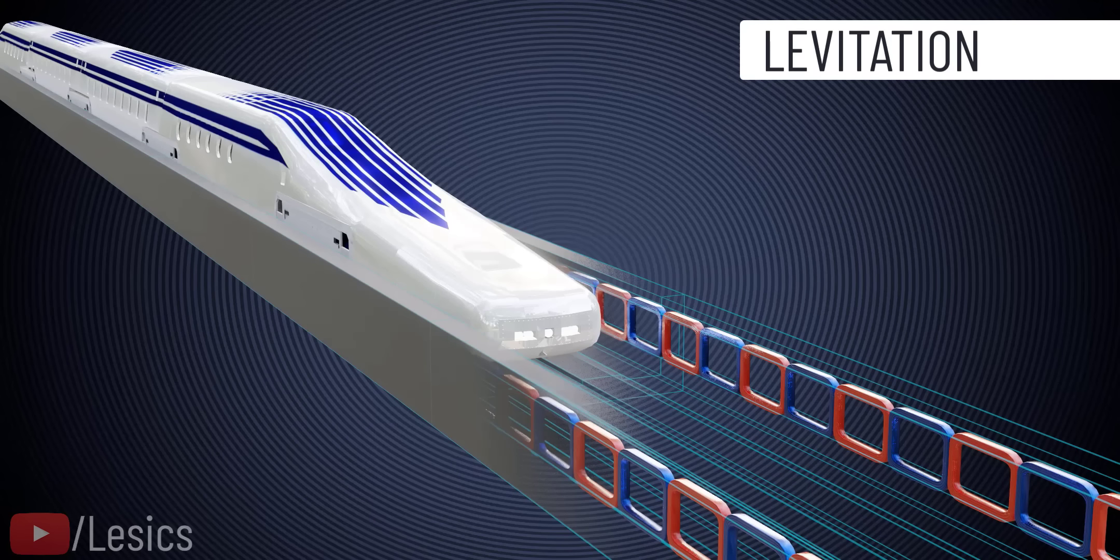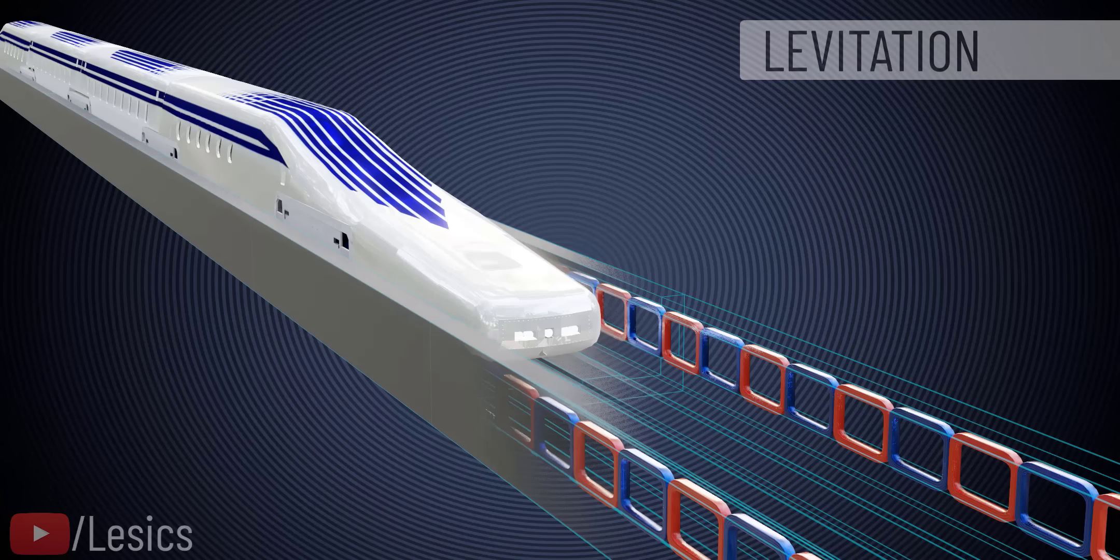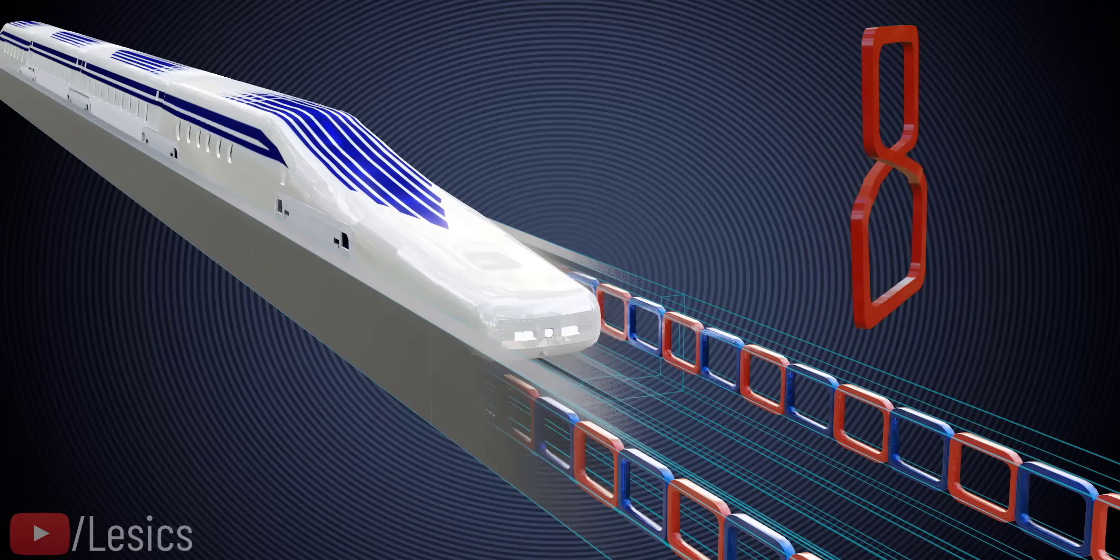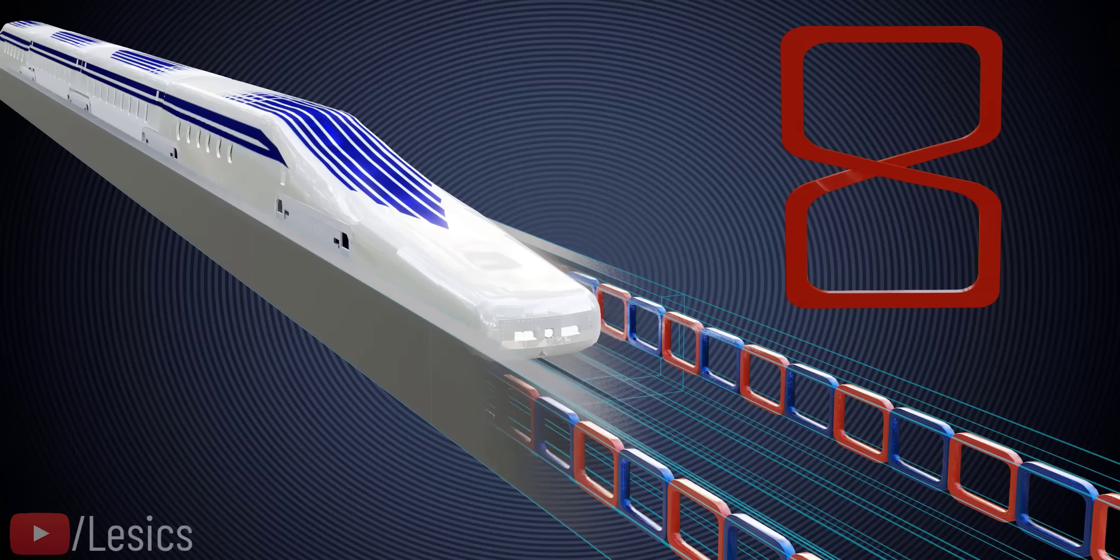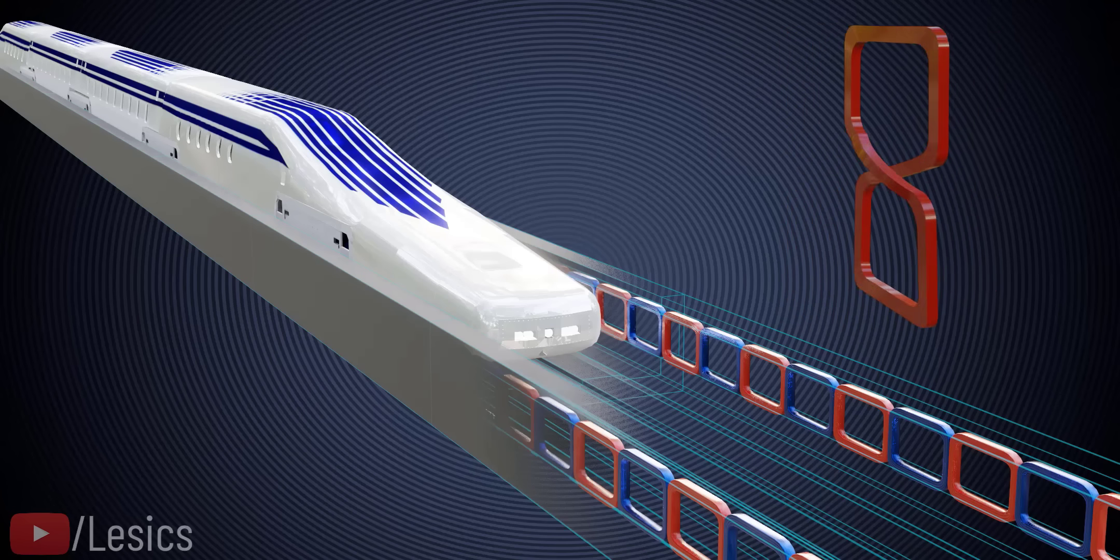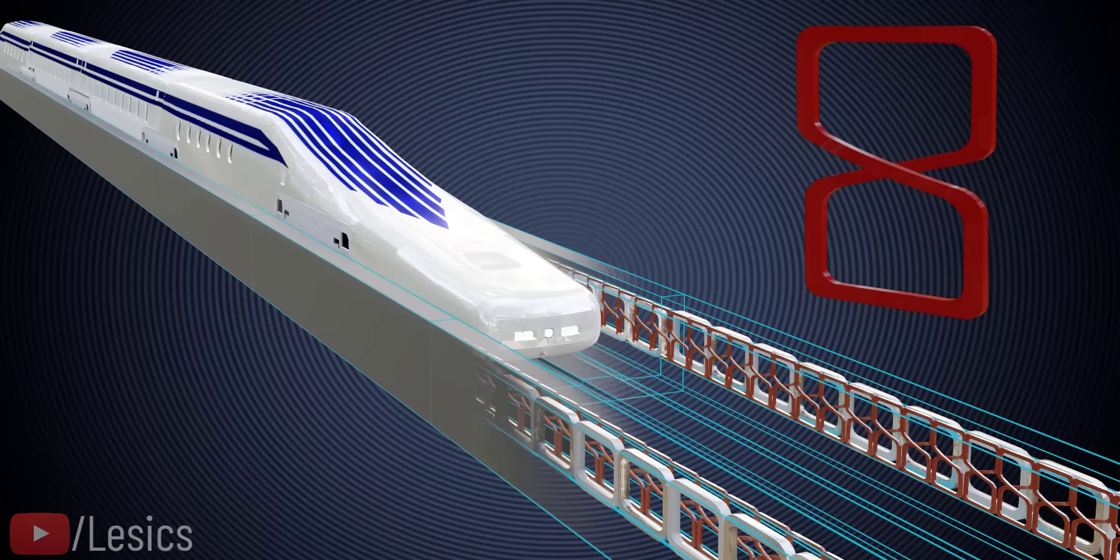You may be surprised to learn that the SC maglev train's levitation is achieved with the help of these simple figure-eight shaped coils, which are not even powered. Many such eight-figure shaped coils are arranged in the guideway.